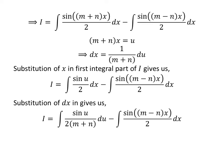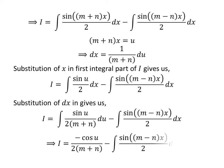Now let us replace the differential of x by our newfound value, 1 upon m plus n times the differential of u. So I is equal to the integral of sine of u upon 2 times m plus n, with respect to u, which gives minus cosine of u upon 2 times m plus n, minus the integral of sine of m minus n times x upon 2 with respect to x.